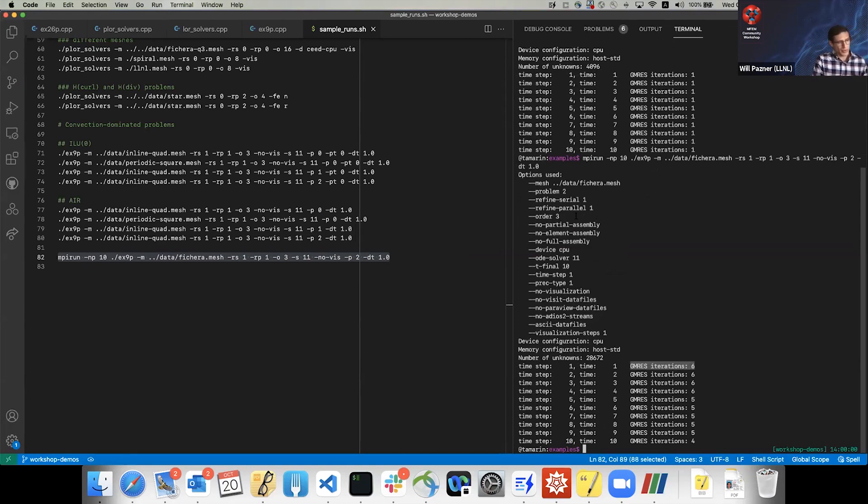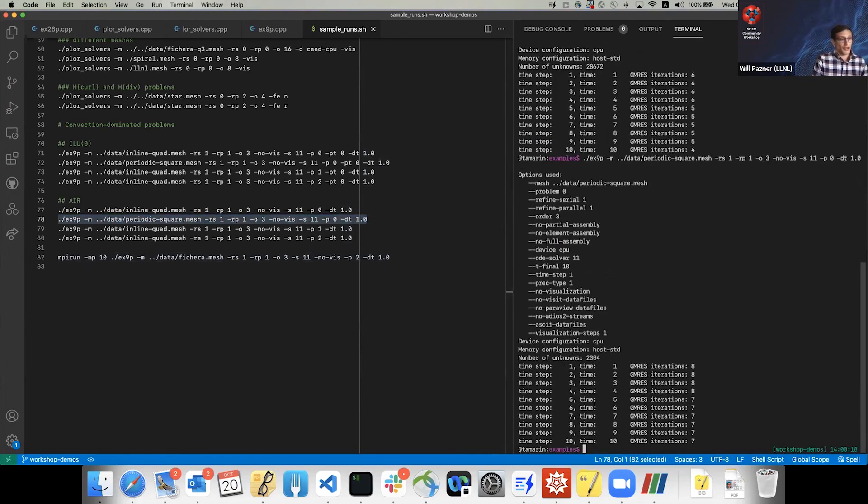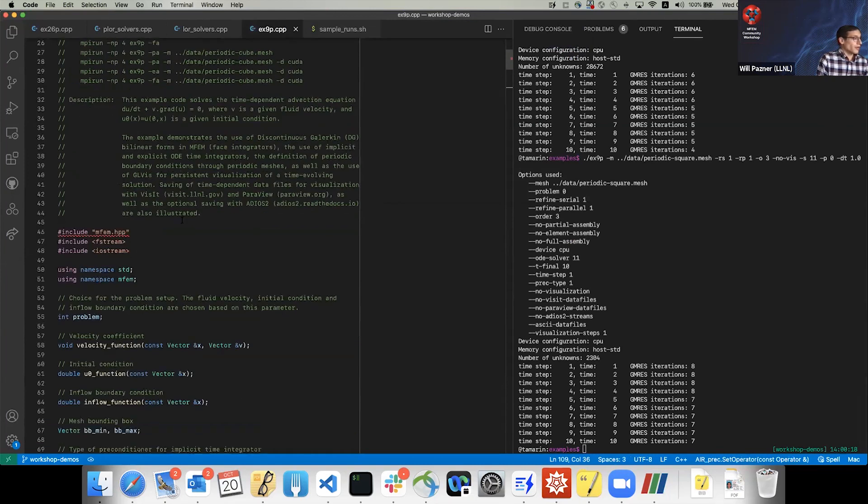You can try with periodic meshes, which also have these cycles, or curved velocity fields where you'll get cycles. I'll show the periodic square. In this example, even in serial, there's no perfect ordering, but the solver still converges quite well. This is with AIR, but you can change the solver with a flag to do ILU0.